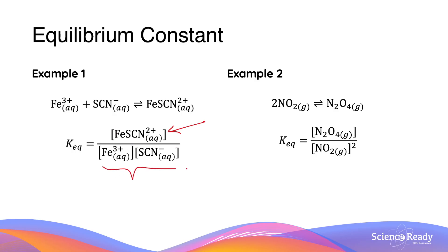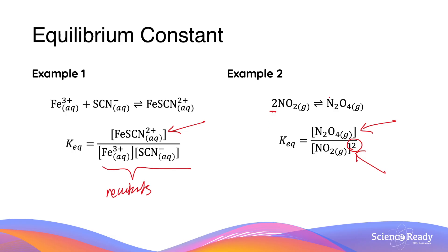In the denominator we have the reactants. Similarly, in the second equilibrium system between nitrogen dioxide and N2O4, we have the product in the numerator divided by the reactant in the denominator. Notice how the concentration of nitrogen dioxide is squared because there is a 2-to-1 stoichiometric ratio in the second reaction.